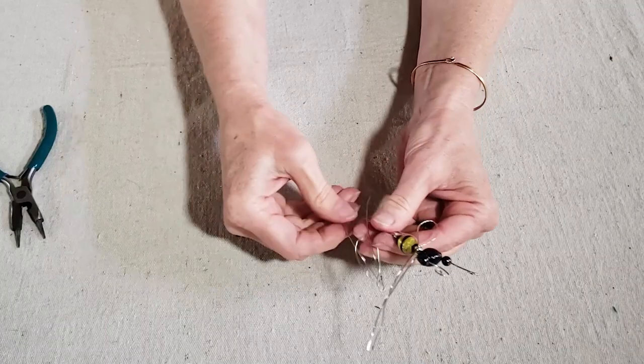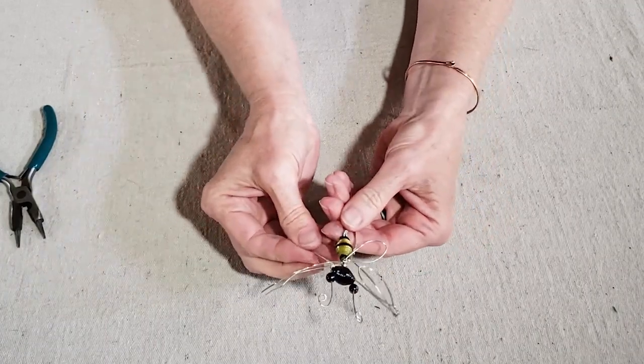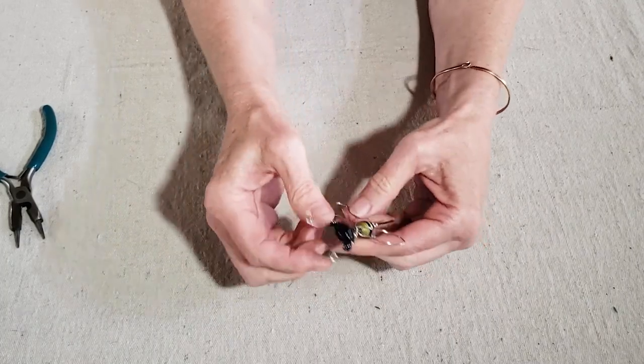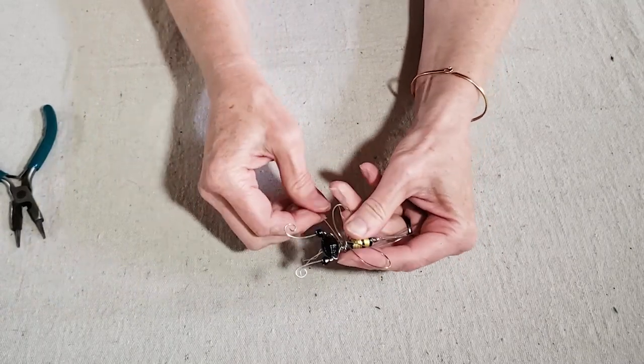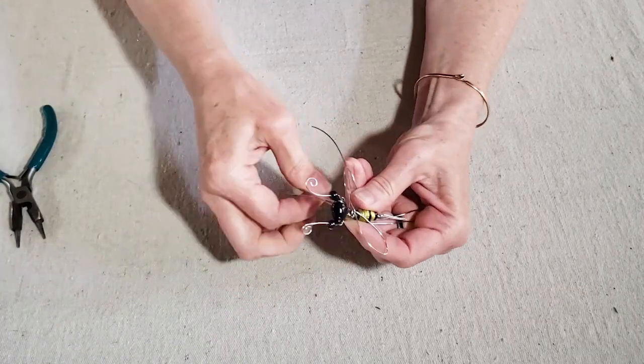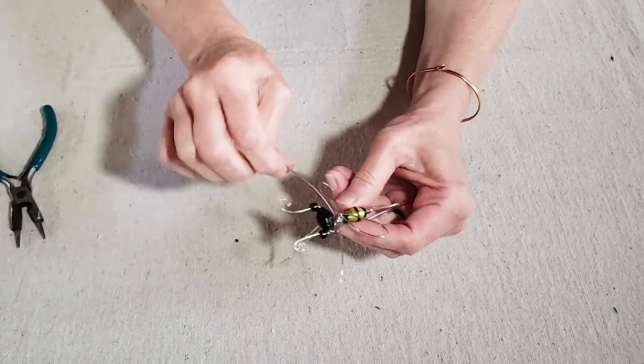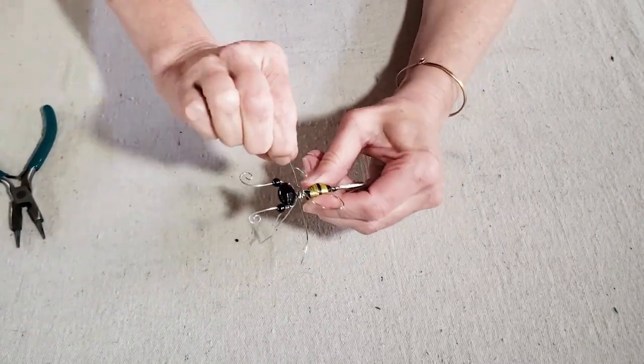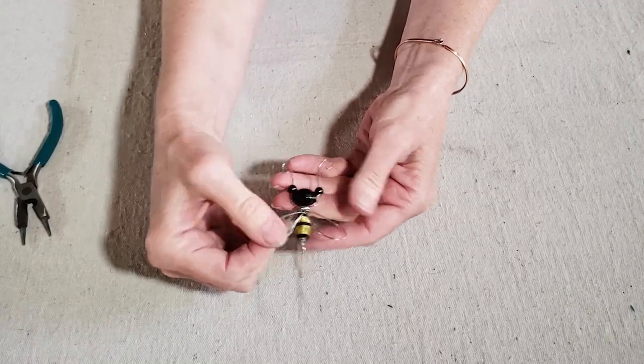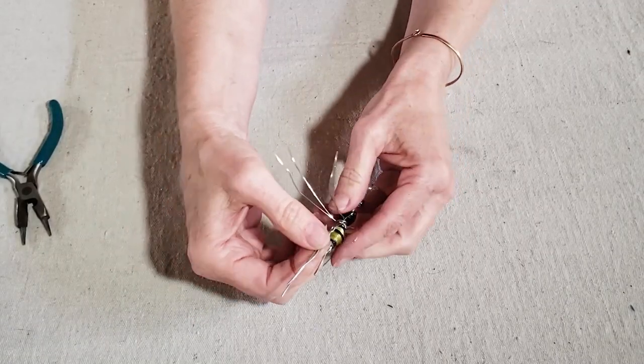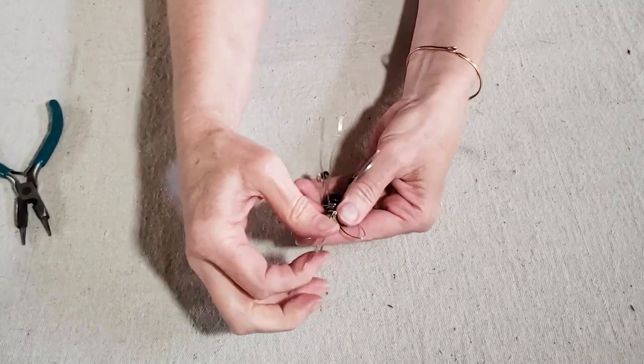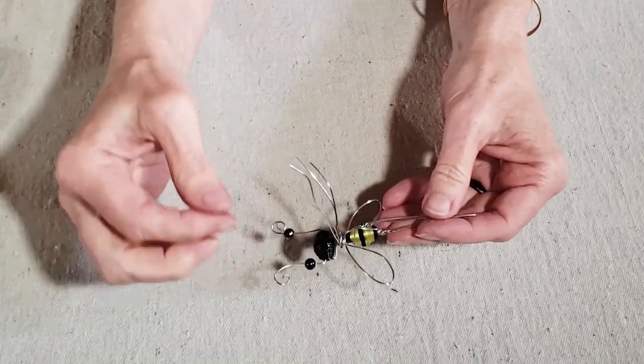And then I'm going to take my second wing and slide it in opposite direction over the neck. Hold it in place. And again, take one wire at a time and wrap it twice around, making sure I'm getting it as tight as possible. And so now I've basically determined the top and bottom of my bee. So I want to go ahead and make sure that my original wires are centered on the bottom below where the wings are.